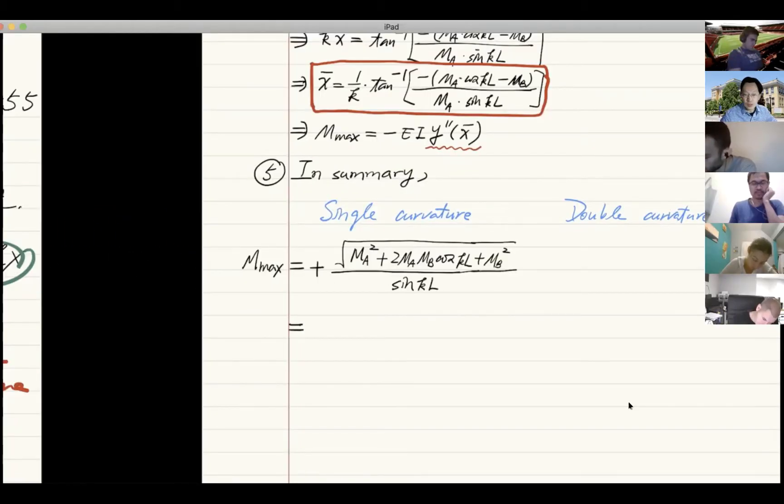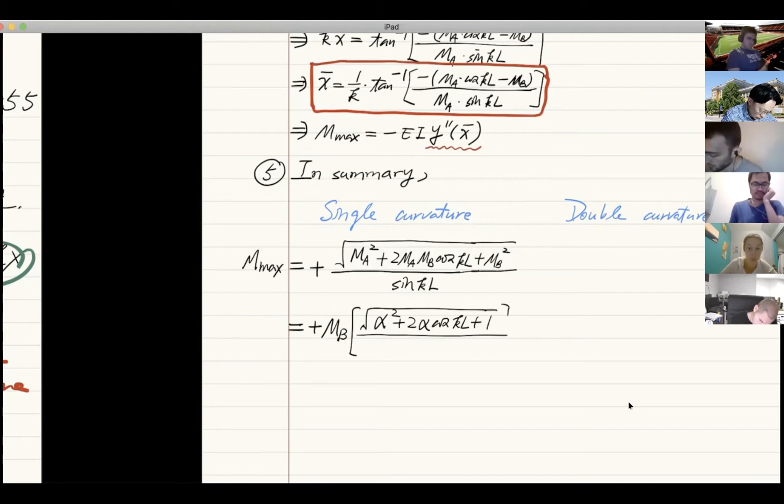This is the original expression. By taking the MB square out of the square root, you can write this whole thing as positive MB times the square root of alpha square plus 2 alpha cosine KL plus 1, divided by sine KL.